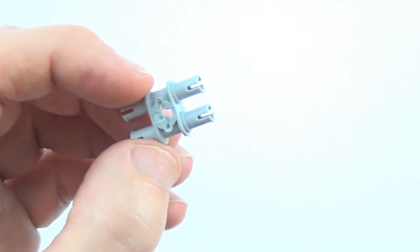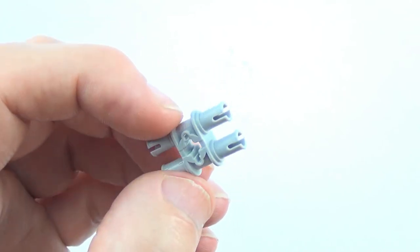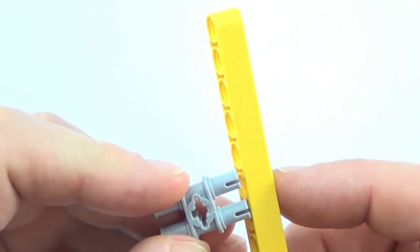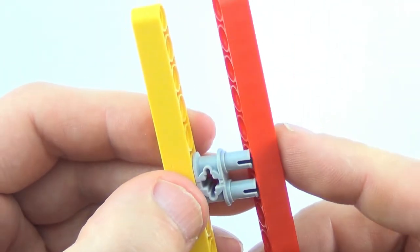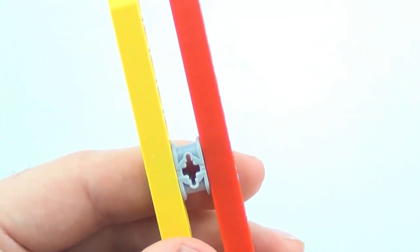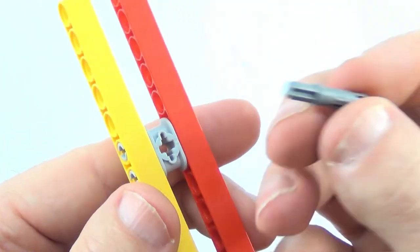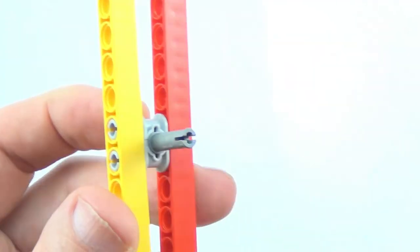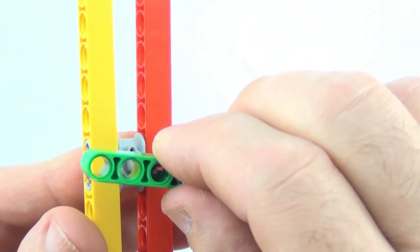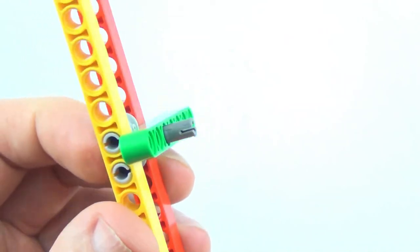A double pin with an axle hole in the center allows us to maybe add two Technic beams together, and then we may want to grab some sort of axle or axle pin and build something else. Very handy.